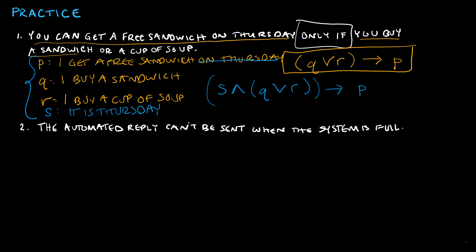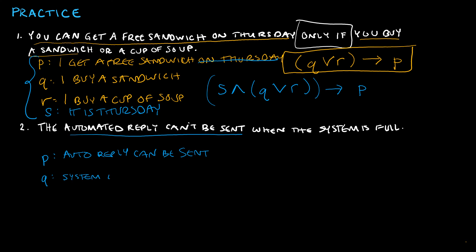For the next question: 'The automated reply can't be sent when the system is full.' I identify two propositions — P: auto reply can be sent, and Q: system is full. 'The automated reply can't be sent when the system is full' means if the system is full then the auto reply can't be sent — P is 'auto reply can be sent' and we're saying it can't be when Q is true. So that's an if-then, an implication.